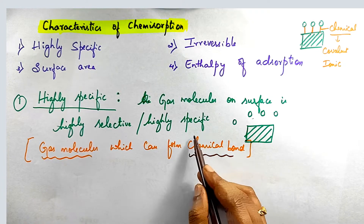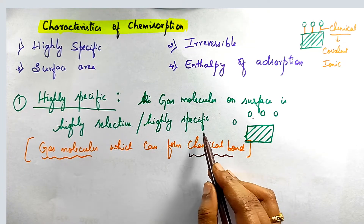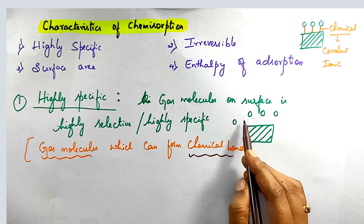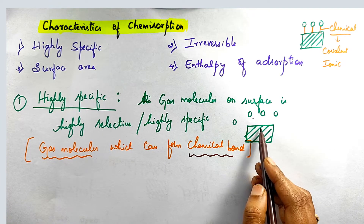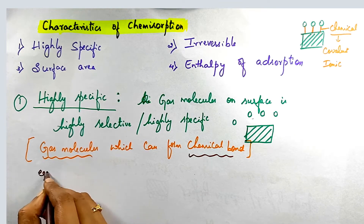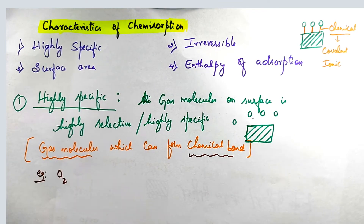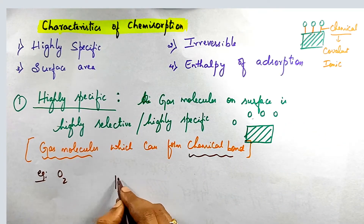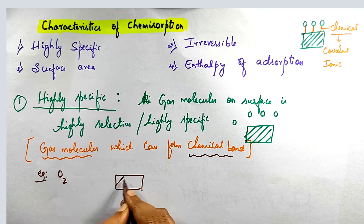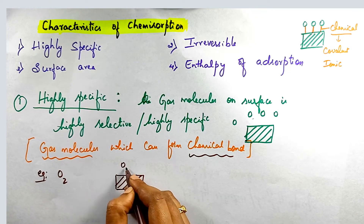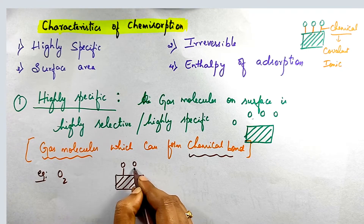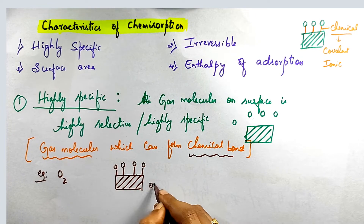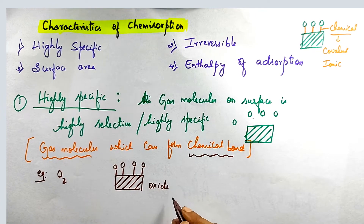Only molecules capable of chemical bond formation can sit on the surface of the material. For example, oxygen can form a covalent bond on the surface of the material to form oxides of a metal. So only specific molecules that can form covalent or ionic bonds are selectively adsorbed on the surface.